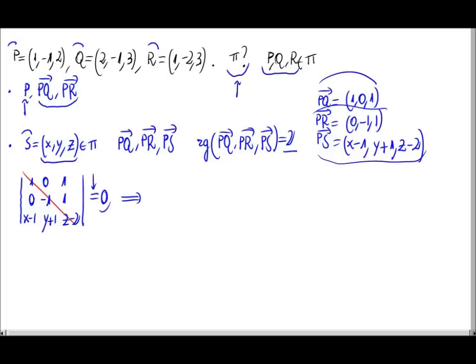So let's make this determinant equal 0 and we will obtain the general equation of the plane pi we want to calculate. The main diagonal is 1 times minus 1 times z minus 2, which is minus z plus 2. This triangle here is 0 times 1 times x minus 1, and the other triangle is 0 times 1 times y plus 1. So those both terms are 0. Those are the positive terms of the determinant.